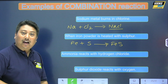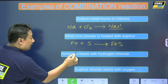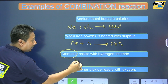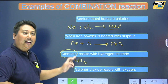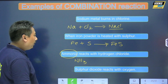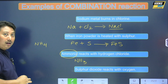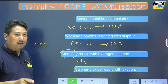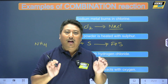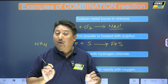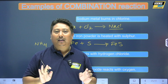Ammonia reacts with hydrogen chloride. The formula for ammonia is NH3. Ammonium is the polyatomic ion, NH4+. It is very important to know the chemical equations and chemical formulas. Polyatomic ions are an important concept in chemical formulas.